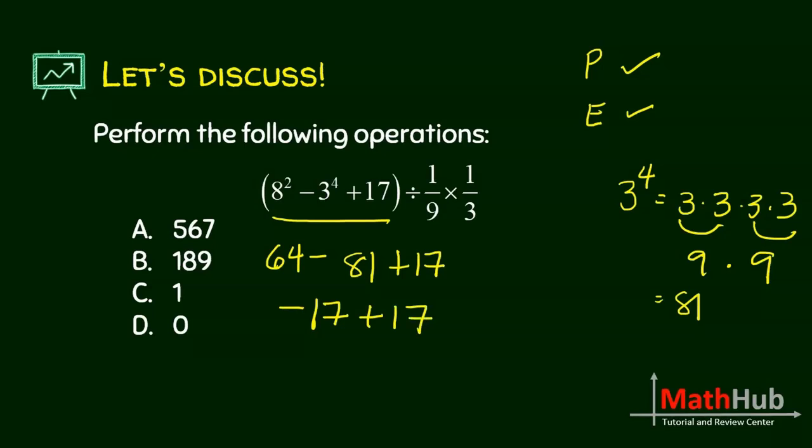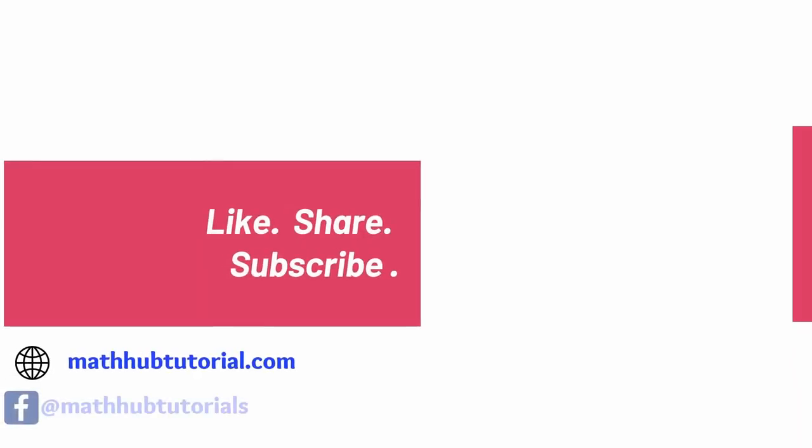So that means this whole thing is 0. 0 divided by a number is 0, times a number is still 0. So that's why the answer is letter D.